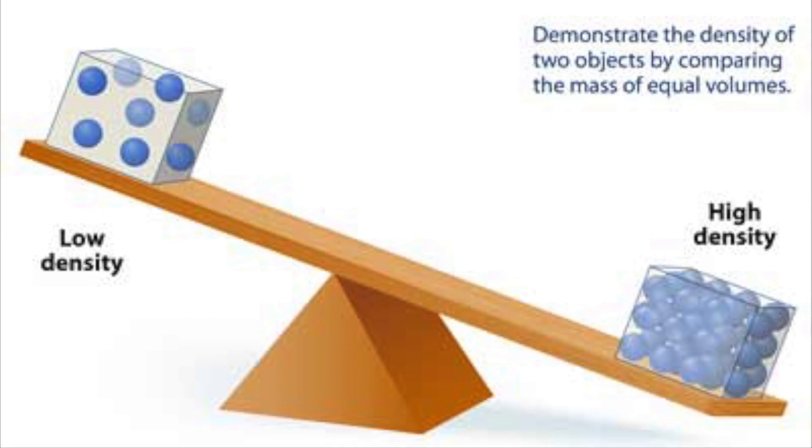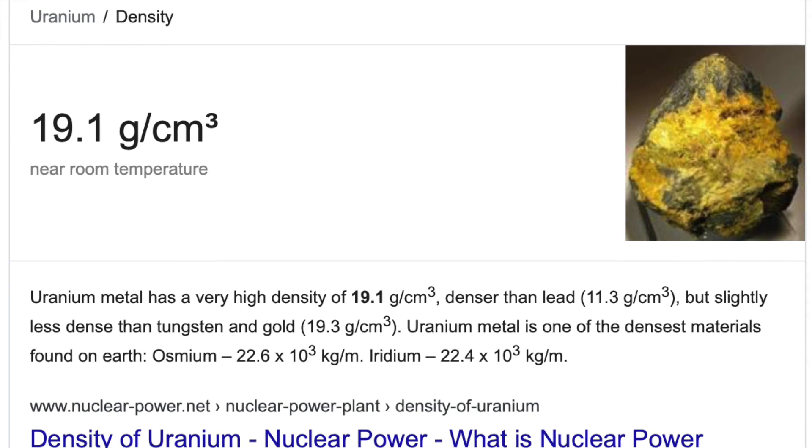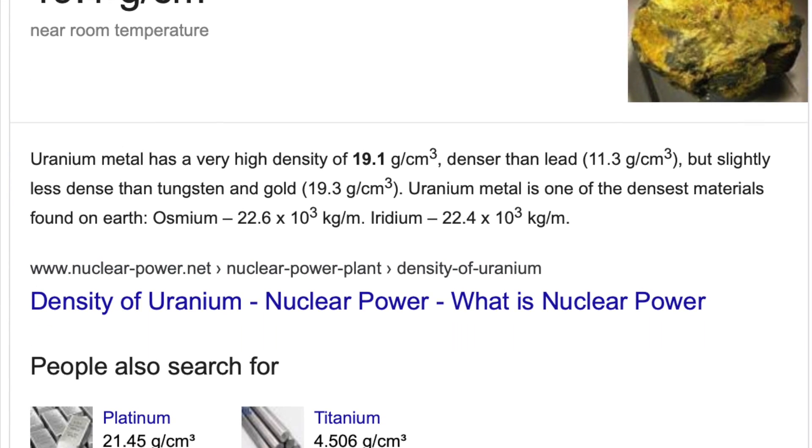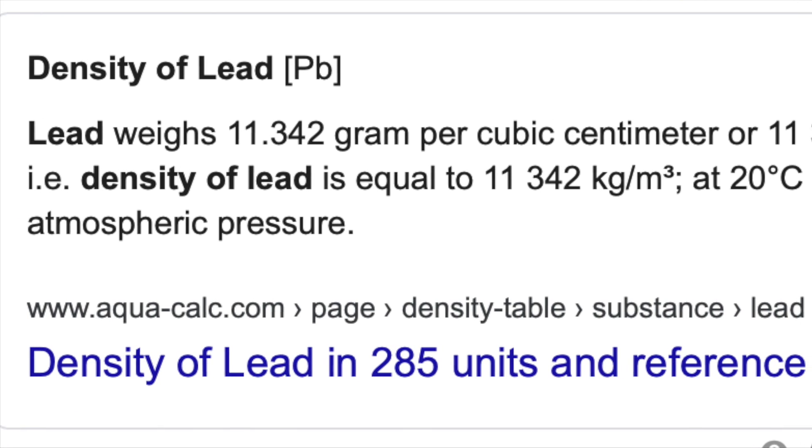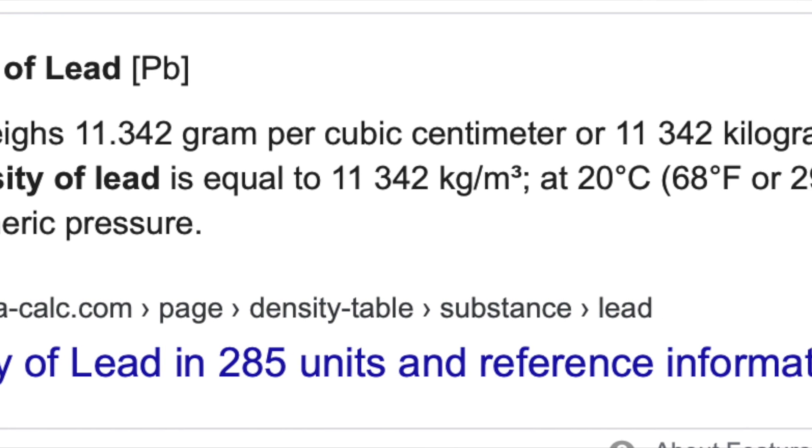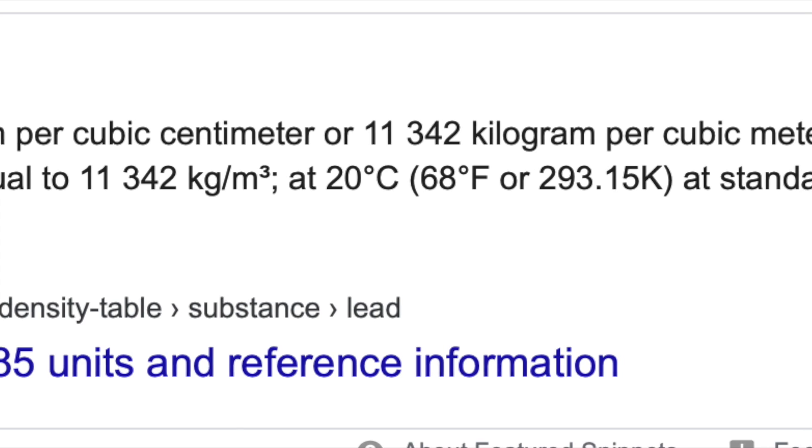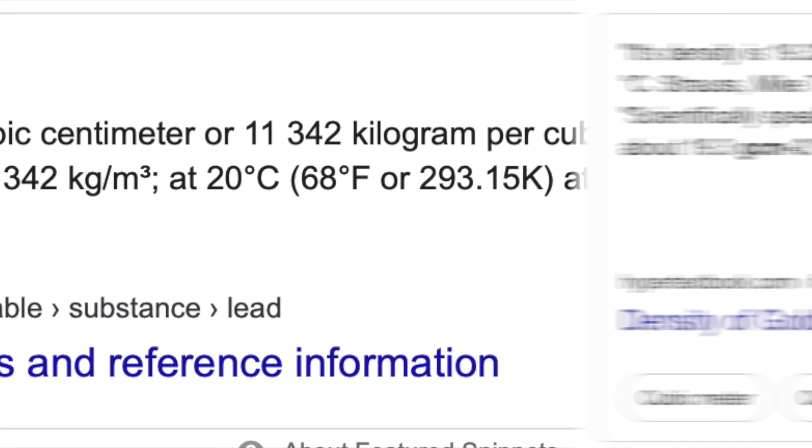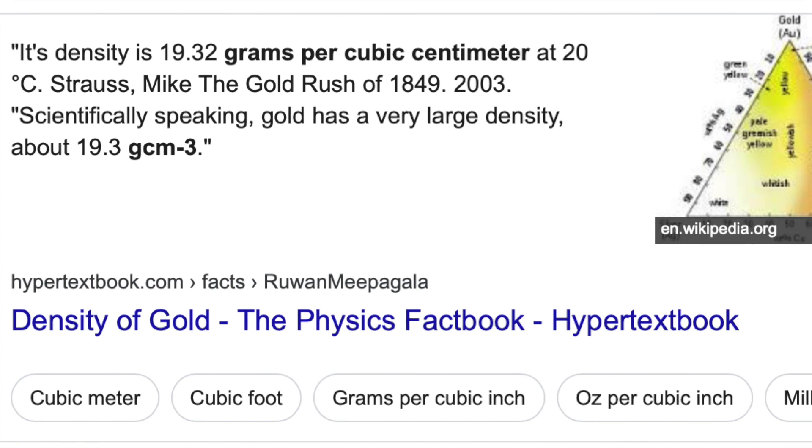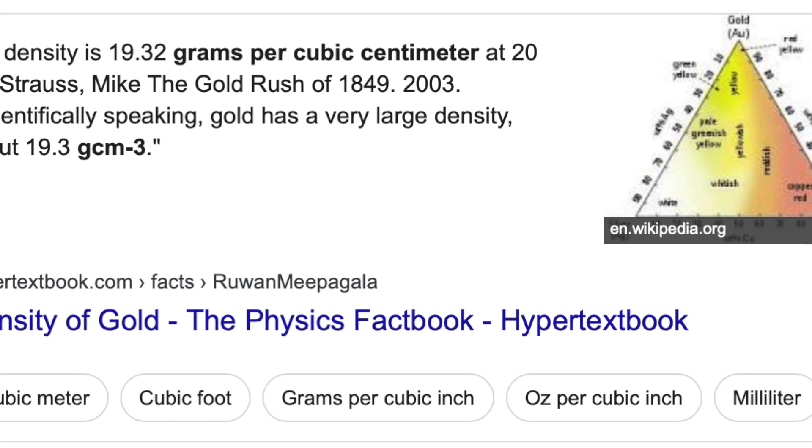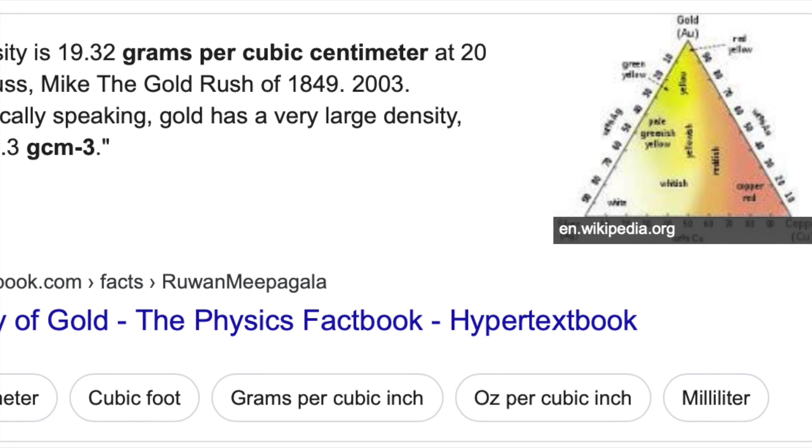Uranium metal is quite dense, with a density of 19.1 grams per cubic centimeter. This is 68.4% denser than lead, with lead having 11.342 grams per cubic centimeter. Gold has a density of 19.32 grams per centimeter, and steel has 8.05 grams per cubic centimeter.